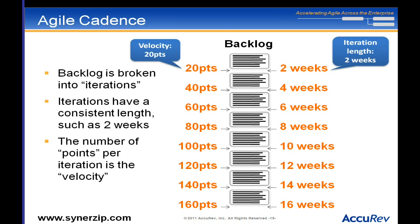Once we have our backlog, we break it up into iterations. An iteration is generally something like one, two, or four weeks — consistent in length. Over time I establish something called a velocity, which is how many story points I can get done in an iteration. For instance, if my iteration is two weeks, perhaps I can get 20 story points of work done.